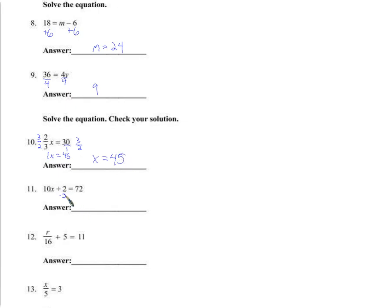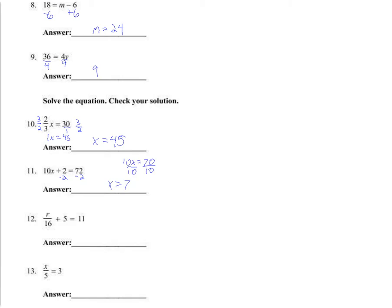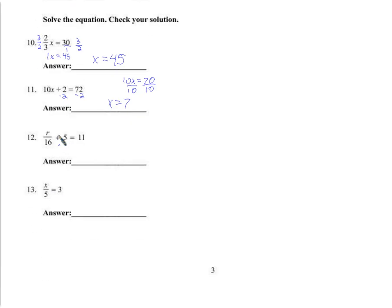A lot of you found this one: subtract 2 from both sides, then you have 10x equals 70, divide by 10 on both sides, and x equals 7. Here, not a lot of you got this one — and that's fine. We would subtract 5 from both sides and get R over 16 equals 6.